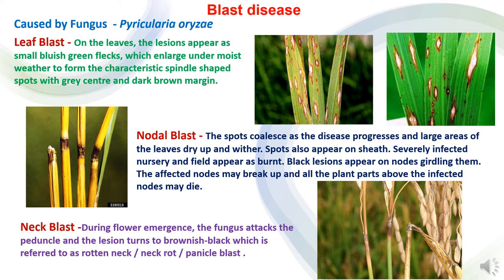Third is neck blast. The fungus attacks during flowering emergence and the lesions become brownish-black in color, which is called rotten neck, neck rot, or panicle blast.